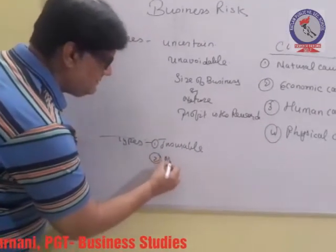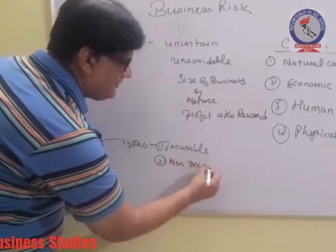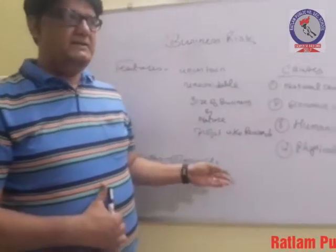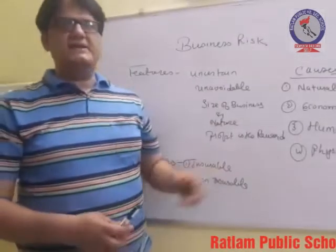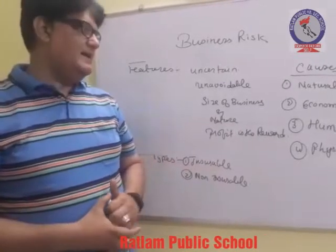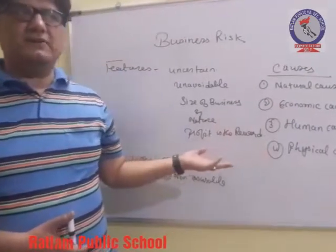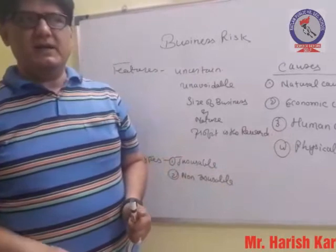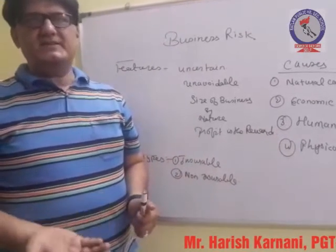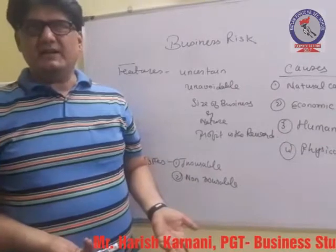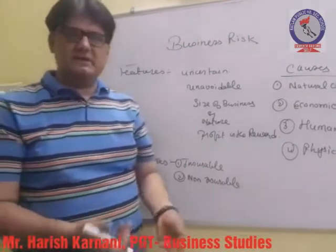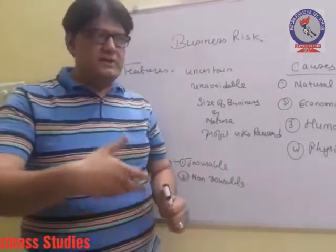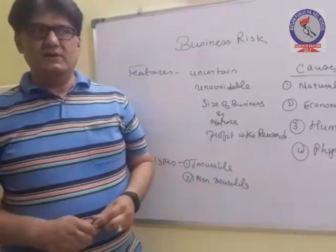Then comes non-insurable risk — those types of risks which cannot be insured and for which the businessman cannot get any form of compensation. Economic causes, human causes such as dishonesty by employees, riots, and strikes due to which production is not taking place — all these fall in this category. You cannot insure all these things, so you have to suffer the losses.